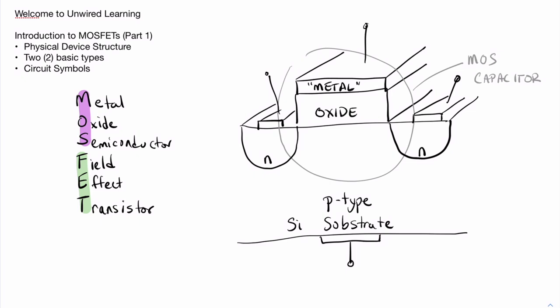So we need to label all of these connections. It turns out that this device has four different connections, which does differ a little bit from the bipolar junction transistor, which had three connections. In this case, the connections are usually labeled as gate, and then on the right side, we might call that the drain, and the left side, we'll call that the source.